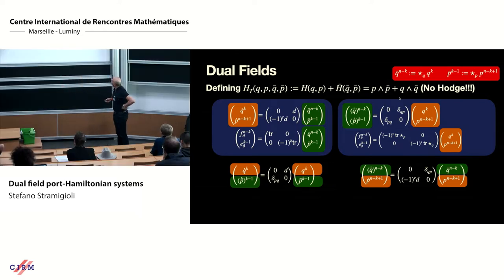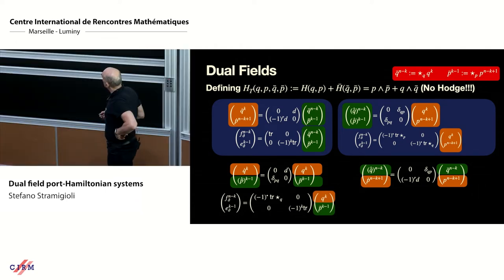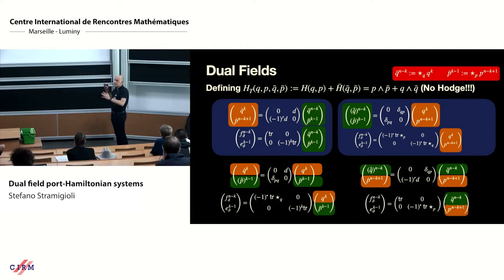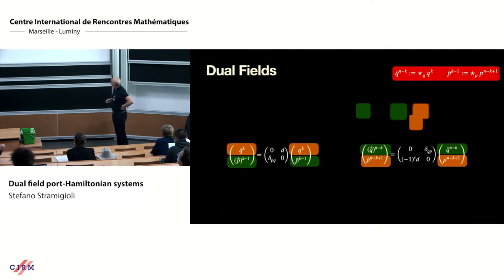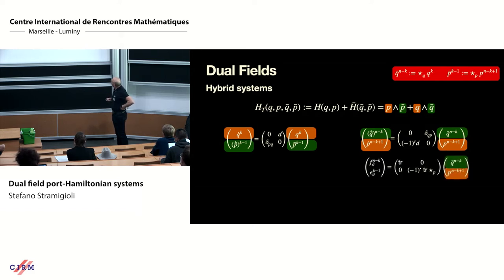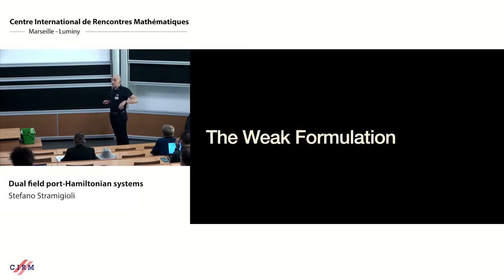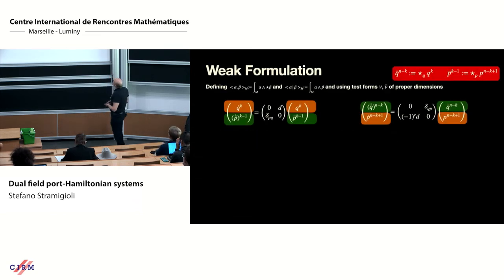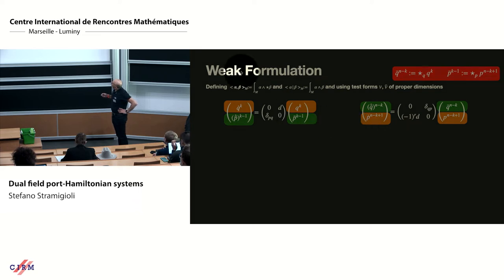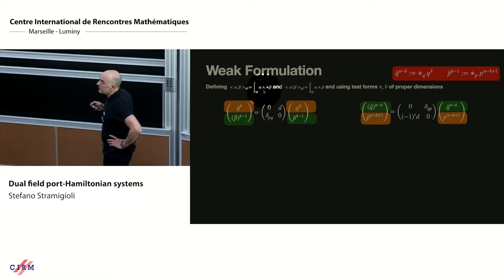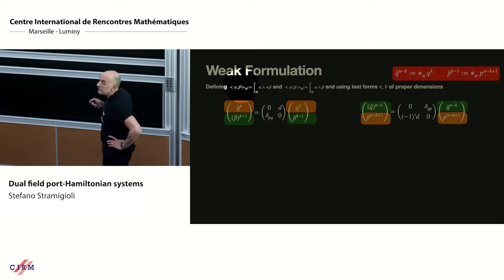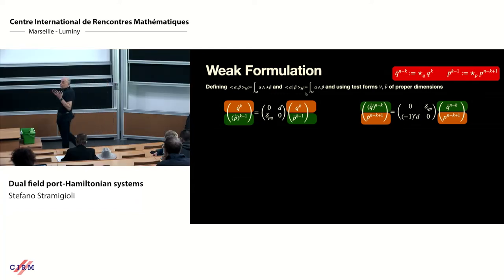Crossing the boundary terms as well gives two separate systems. Moving to the weak formulation: the inner product with comma notation is the integral over the domain of α ∧ ★β, giving the Hilbert structure. The dual (or duality) pairing is the intrinsic wedge product ᾱ — this does not require any metric structure to be defined.